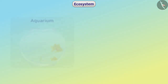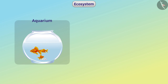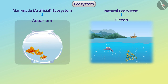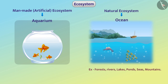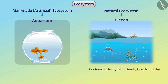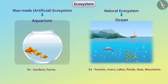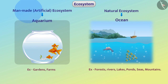Ecosystems can be very small, like a small aquarium, and they can be very big, like an ocean. Ecosystems can be natural or man-made, that is, artificial. Ecosystems created by nature — like oceans, forests, rivers, lakes, ponds, seas, and mountains — are all natural ecosystems, while ecosystems created by humans, such as aquariums, gardens, and farms, are all man-made ecosystems.